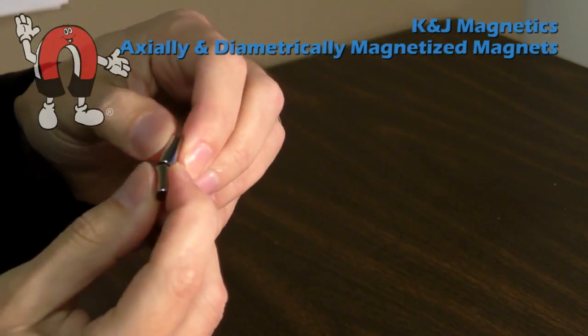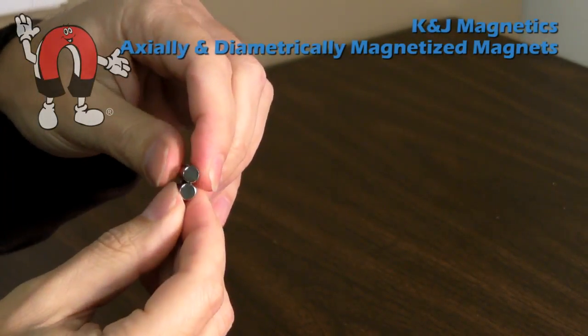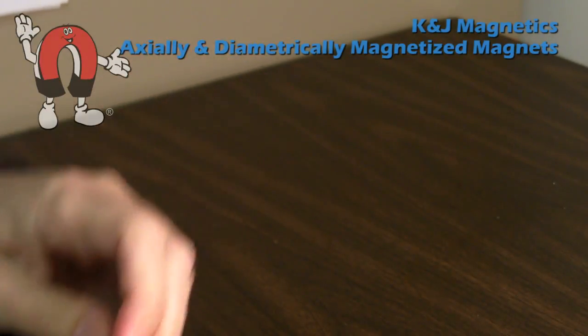You can stick diametrically magnetized magnets together end to end, but the attraction is not as strong and they tend to want to flip over to be side by side.